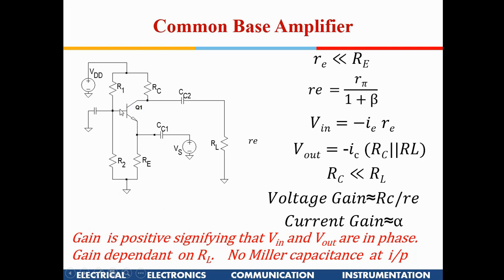In the common emitter amplifier, an increase in base voltage draws more current and the collector voltage drops — so they are out of phase. In the CB amplifier, an increase in emitter voltage decreases IE, which increases the voltage drop across RC, so V-in and V-out are in phase. The gain also depends on RL, so it cannot drive low loads effectively.